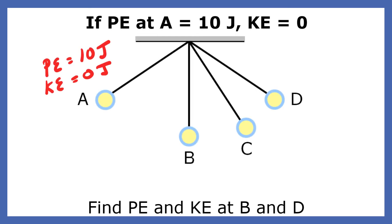The law of conservation of energy tells us that when no work is done on or by a system, its total energy will remain the same. The swinging pendulum without friction changes from potential to kinetic energy, but the total energy remains the same.